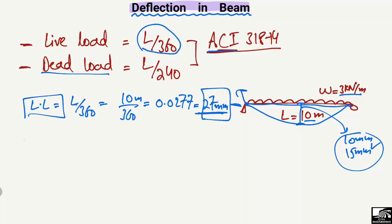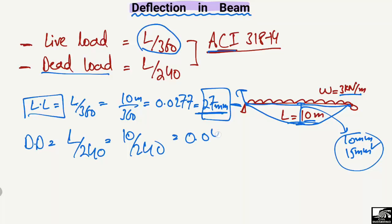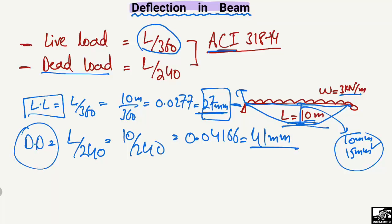For the dead load, the deflection limit is L/240, which for our 10-meter beam is 10 divided by 240, giving 0.04166 meters, or 41 millimeters. So 41 millimeters is the maximum deflection allowed for this beam under dead load. Dead load refers to the self-weight of the beam.